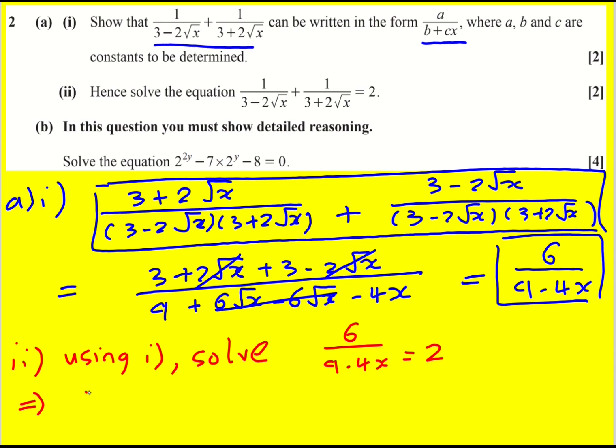And this means that 6 is going to equal 18 minus 8x. 8x is then going to equal 12. Just added 8x onto both sides minus the 6. So x is then 12 over 8 which I can simplify to 3 over 2 or 1.5.